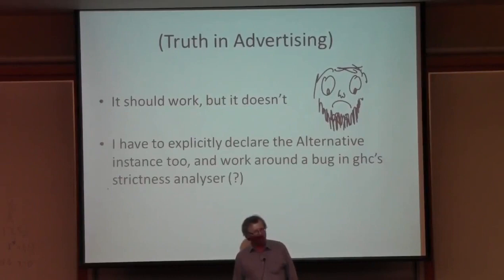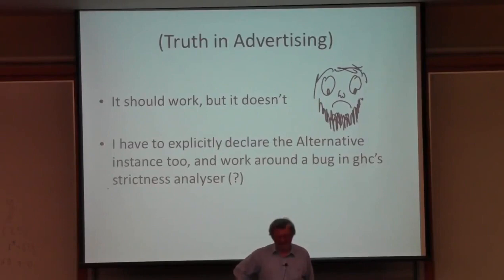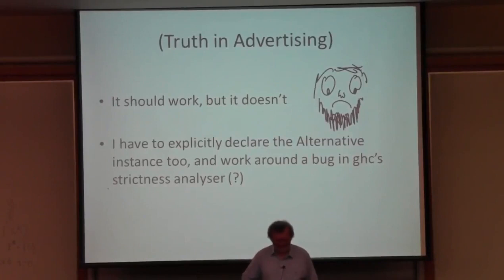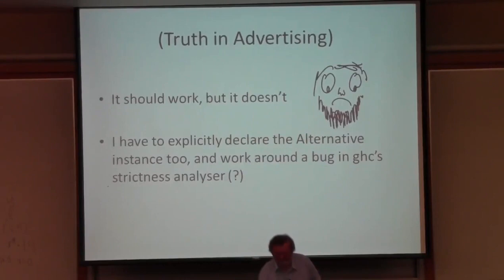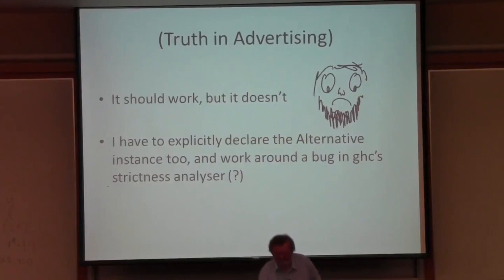It should work, but it doesn't — and I think it's because of a bug in GHC's strictness analyzer. If you write that code, it falls into an infinite loop. To fix it I had to explicitly declare the alternative instance, taking almost exactly what the deriving clause would have generated, but then remove one of the methods and use the default implementation instead. It's a horrible hack, and I've reported this to Simon PJ. I hope that by the time anybody tries to do this again it will work as it should, because with the present version of the Haskell platform you hit this bug.